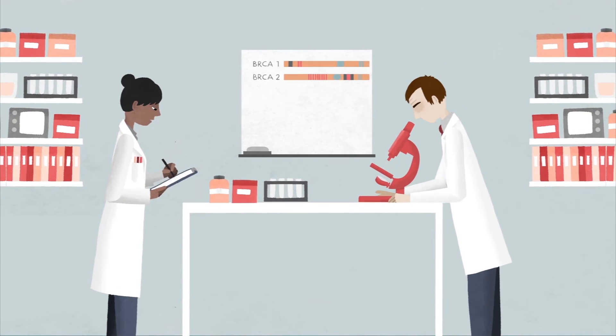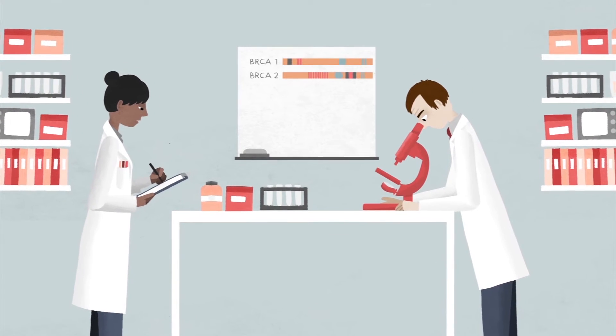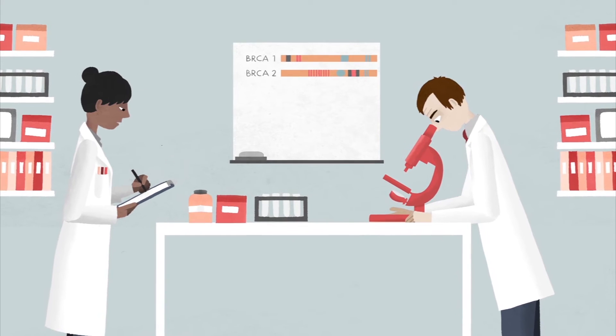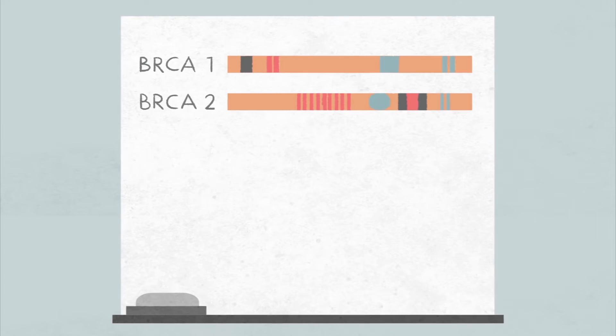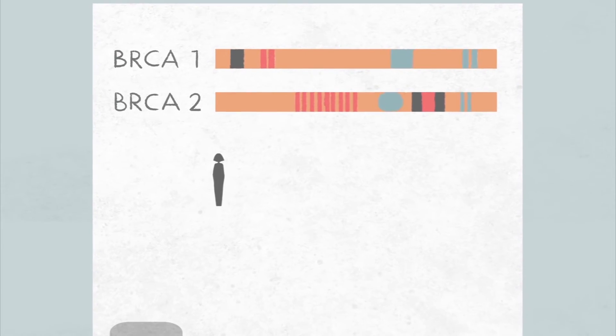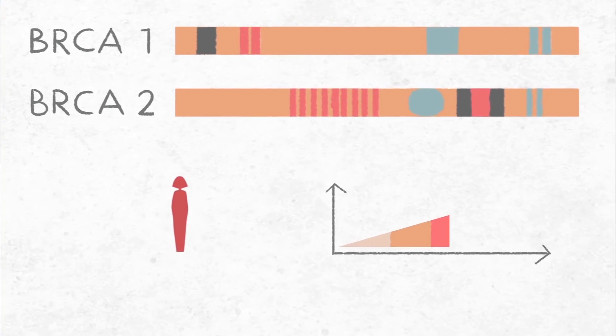Scientists have identified faults in certain genes that can increase the risk of breast cancer. These include the BRCA1 and BRCA2 genes. These faulty genes won't definitely cause breast cancer, but they do increase the chance for it to develop.